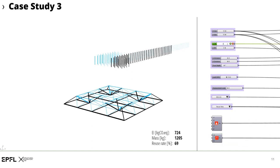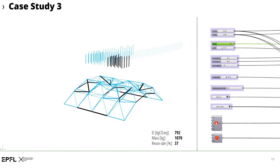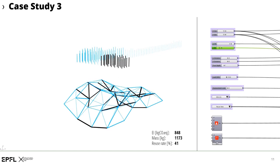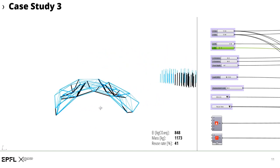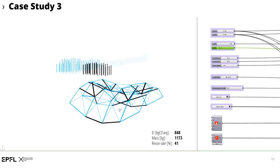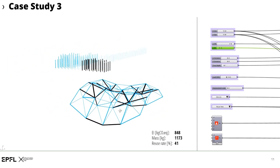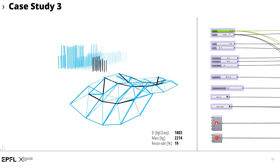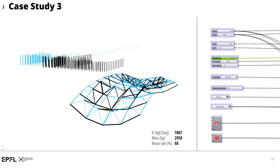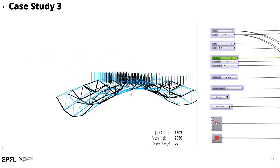By changing the curvature, the size or the subdivisions of the structure, the user can design his or her structure according to specific needs. Thus, we get different topologies and geometries quite easily. In this way, the plugin allows designing structures while always knowing how to make best use of elements from an existing stock.